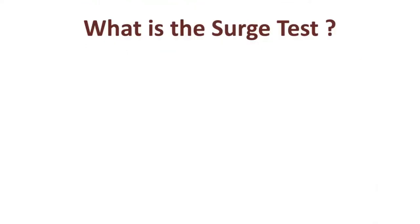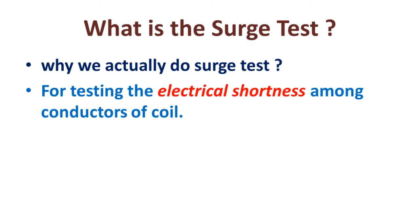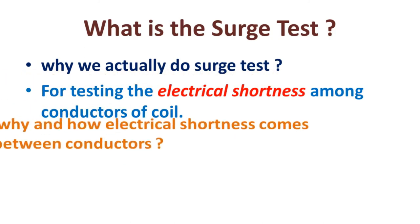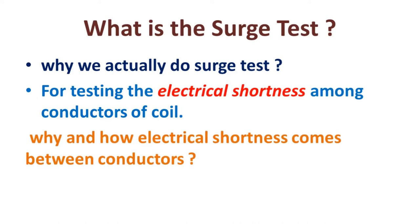Now, we shall know what is the surge test. First of all, we shall know why we actually do surge test and which parameters are checked during this test. If I say in very simple language why we do surge test, I would say testing the electrical shortness among conductors of coil and coil surroundings. Why and how does electrical shortness come between conductors and coil surroundings? My direct answer is that where there is shortness, there has been insulation damaged.